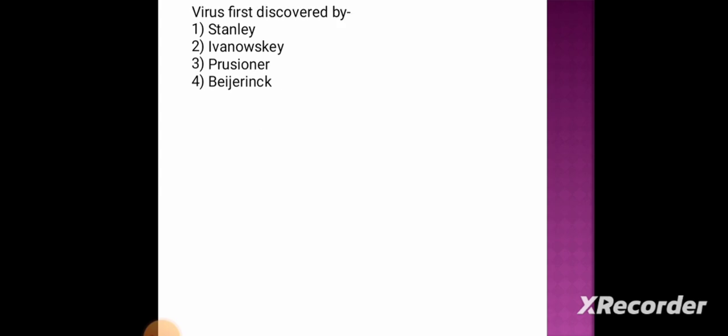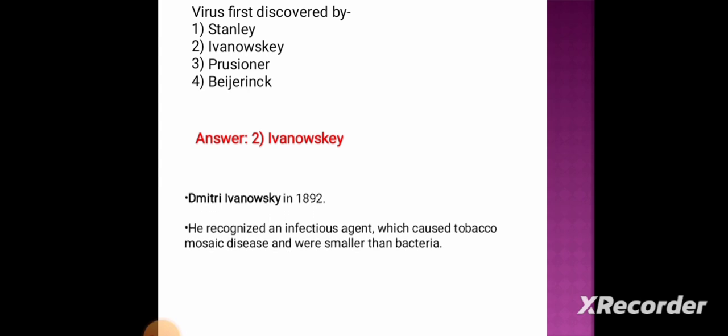Next question: virus was first discovered by — option 1: Stanley, option 2: Ivanowski, option 3: Prusiner, option 4: Phage. The correct answer is option 2, Ivanowski. He discovered it in 1892. Ivanowski recognized an infectious agent that caused tobacco mosaic disease and was much smaller than bacteria.